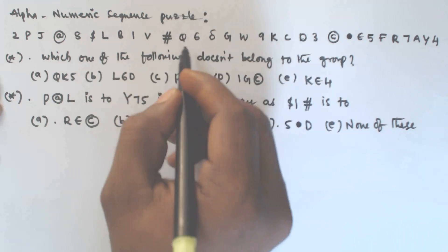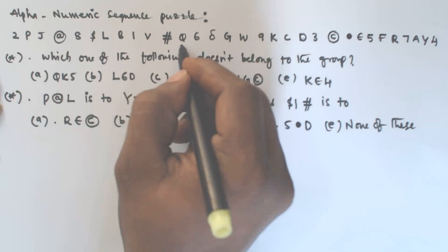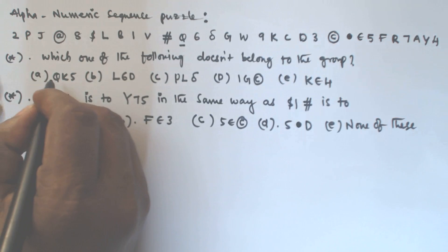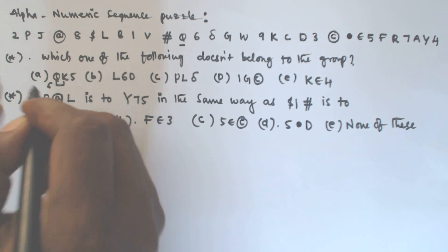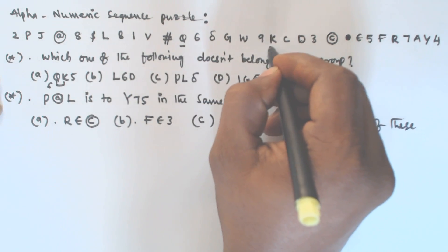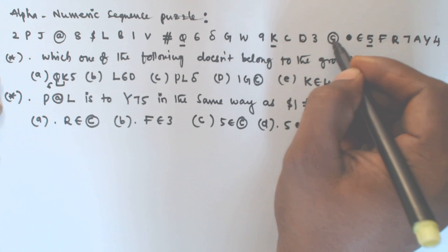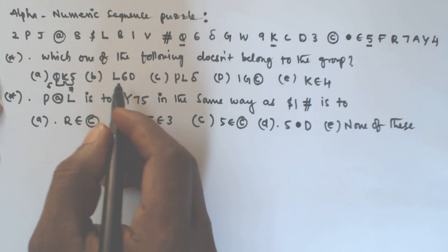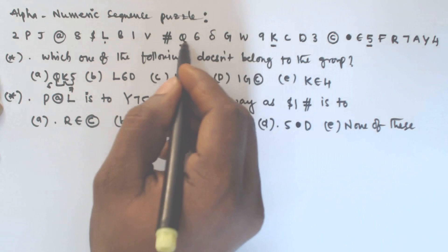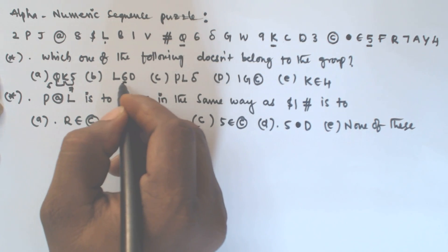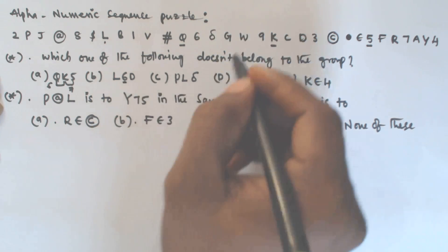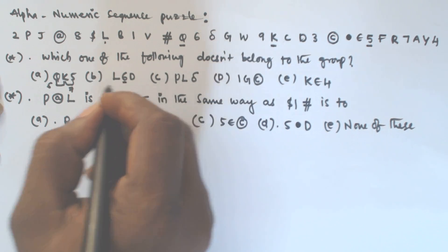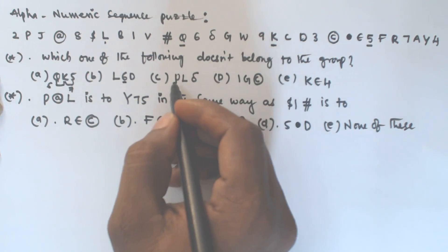For option A: Q is here and K is here — 1 2 3 4 5 6, so six steps from Q to K. From K to 5: 1 2 3 4 5 6 7, that is seven steps. For option B: from L to 6 is 1 2 3 4 5 6 — six steps, and from 6 to D is 1 2 3 4 5 6 7 — seven steps. So both A and B belong to the same group.